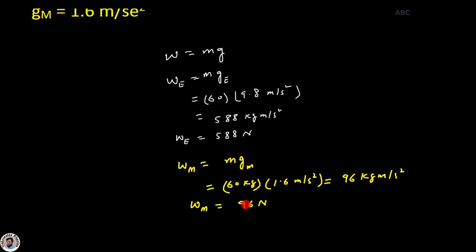دیکھو یہاں پہ g کی value جب کم ہے تو weight بھی کم ہے۔ زمین کی surface پہ value of g زیادہ ہے تو weight زیادہ آ رہا ہے، اور Moon پہ weight کم آ رہا ہے۔ جیسا کہ میں نے پچھلی lecture میں بتایا تھا، weight جو ہے یہ depend کرتا ہے value of g پہ، اور g depends on the location۔ تو جب g زیادہ ہے تو weight بھی زیادہ ہے اور جب g کم ہے تو weight بھی کم ہے۔ So this is something about Example 3.2, thank you.